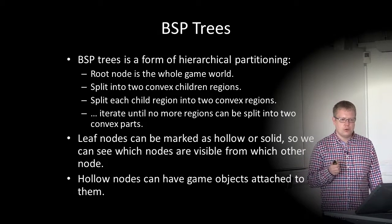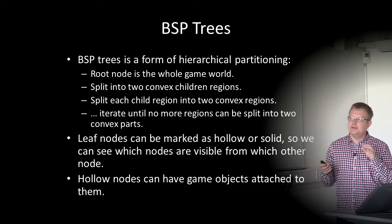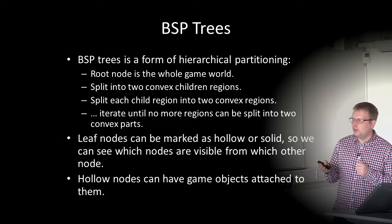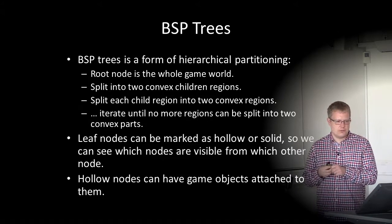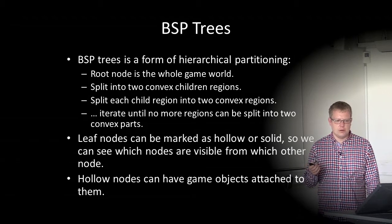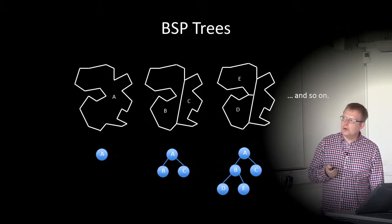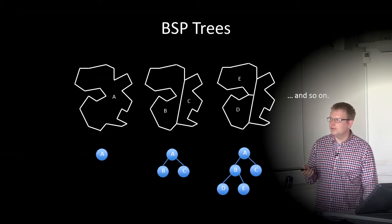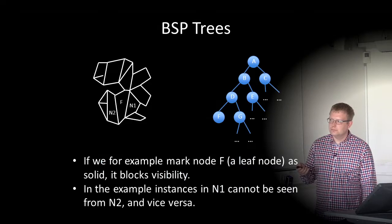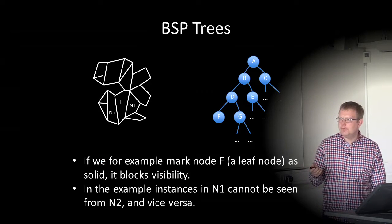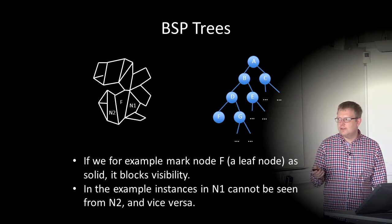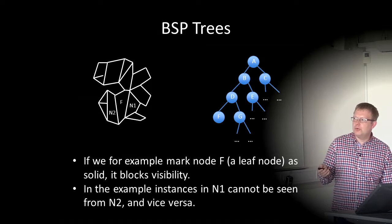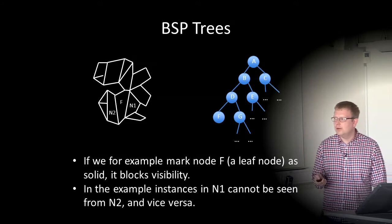A BSP tree is a form of hierarchical partitioning. The root node is the whole game world, split into two convex child regions; each child region is split into two more convex regions, iterating until no more regions can be split. Leaf nodes can be marked as hollow or solid, and we can determine which nodes are visible from which other nodes. For example, if leaf node F is marked as solid, it blocks visibility, so instances in N1 cannot see instances in N2 and vice versa. We can quickly skip rendering all instances in N1 if the camera is in N2 because we know F is solid.